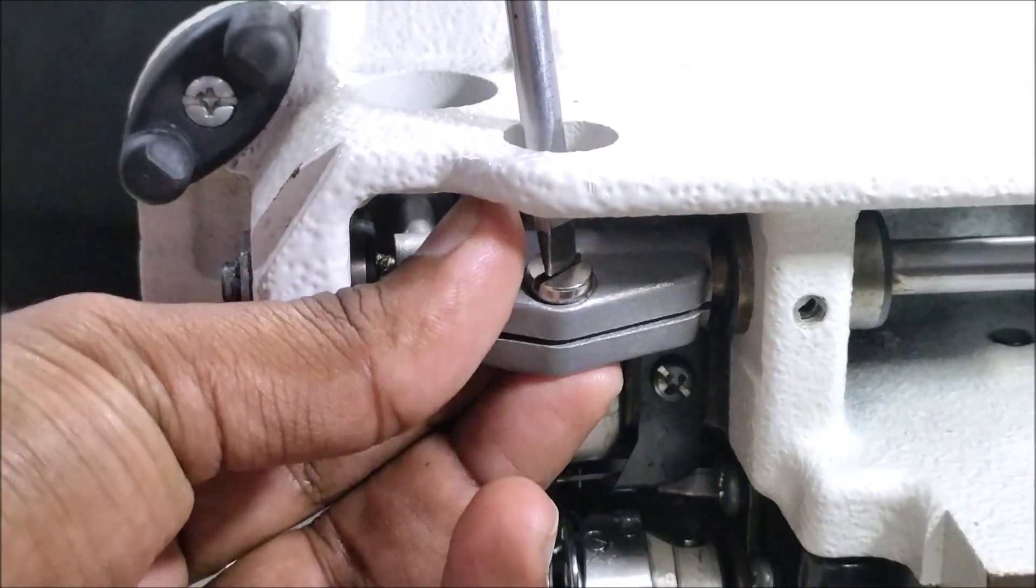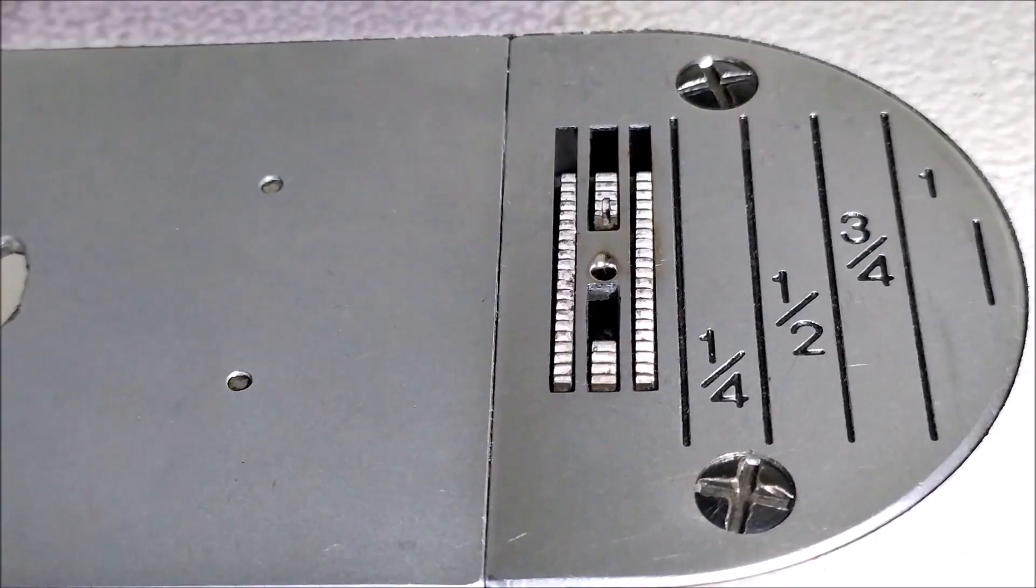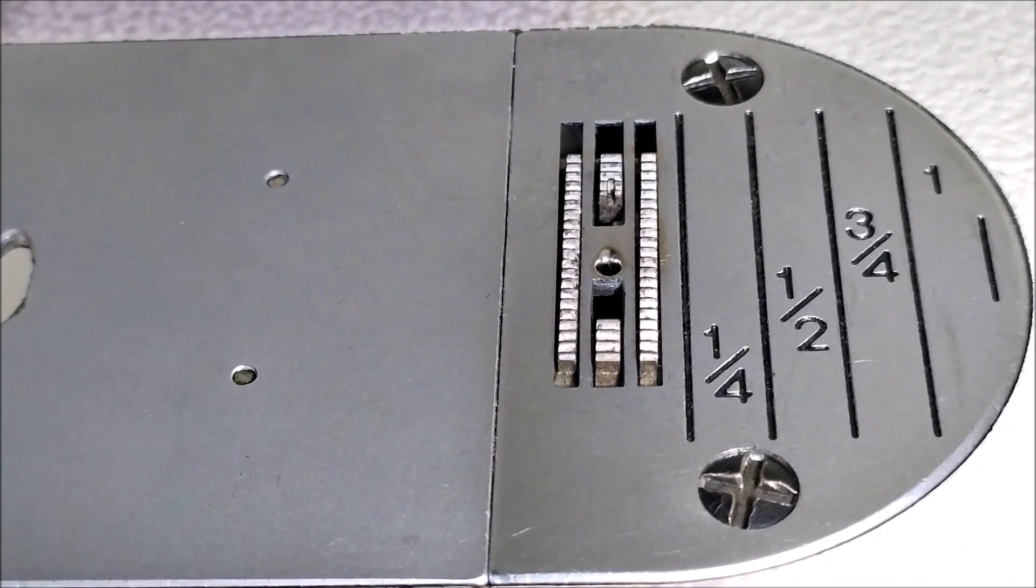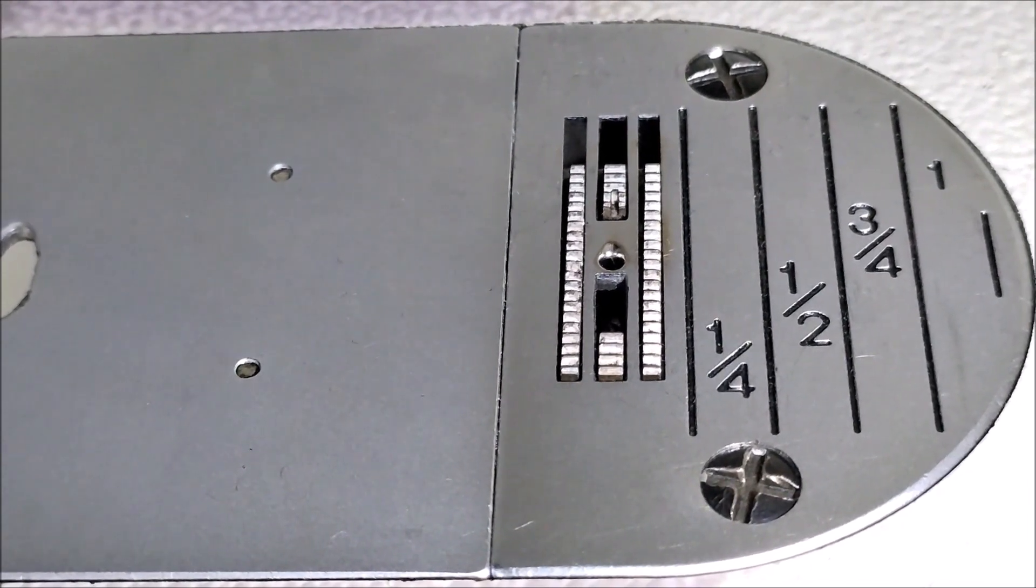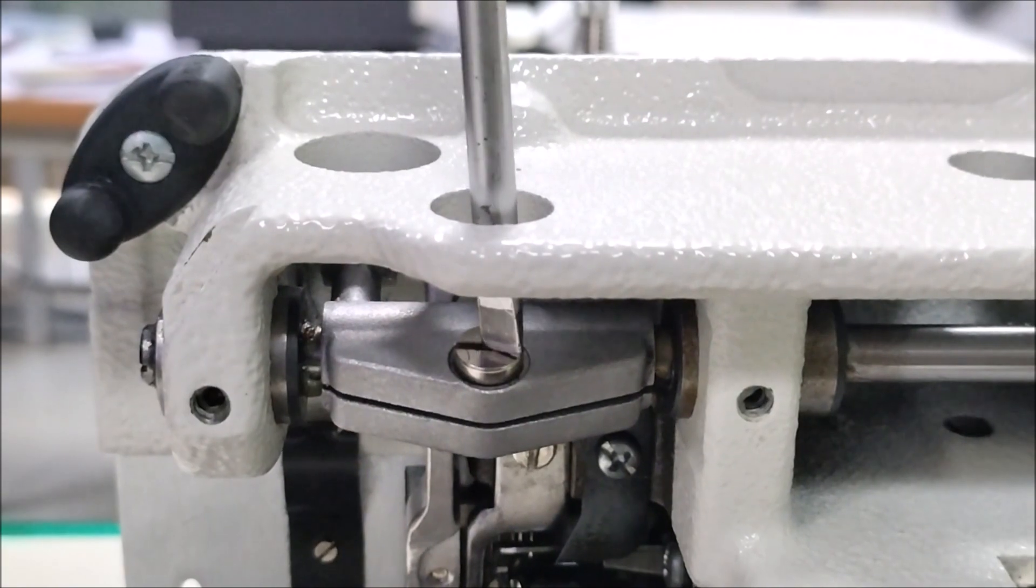By loosening the feed rocker arm bracket, we can get the clearance from feed dog to needle plate. And tighten the feed rocker arm screw again.